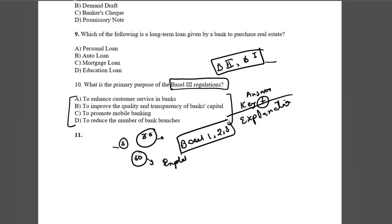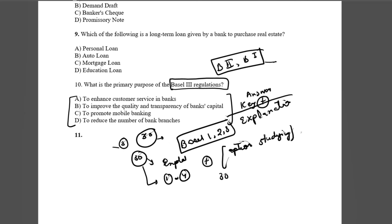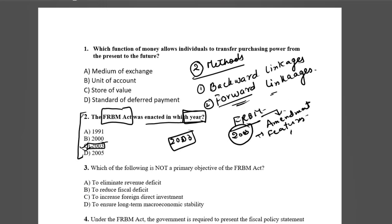With those 30 topics you will cover explanations. Plus, there is one more method: option studying. There are 4 options for each of the 30 questions. For example: 'Which function of money allows the individual to transfer purchasing power from the present to the future?' — and you get 4 options: medium of exchange, unit of account, store of value, and standard of deferred payment.